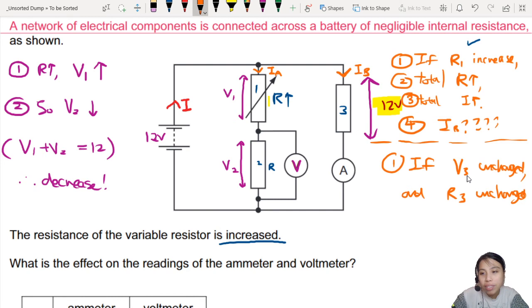So what must be the current? Therefore, I3 is also unchanged. The current through resistor 3 is unchanged.